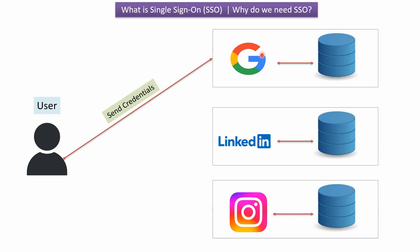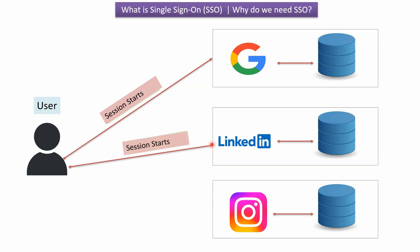If the credentials are valid, then a session starts. Suppose the user has to access LinkedIn — the user has to send LinkedIn-related credentials to the LinkedIn server, then the LinkedIn server will validate the credentials against the database. If valid, a session starts. Similarly, for Instagram, the user sends Instagram credentials, Instagram server checks them against the database, and if valid, a session starts. This is the process without Single Sign-On.